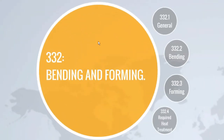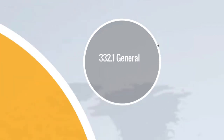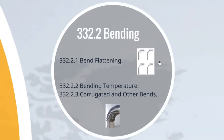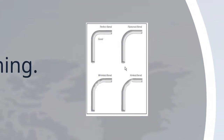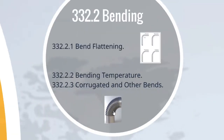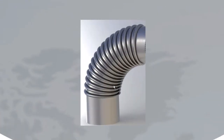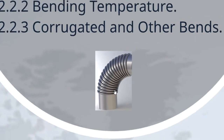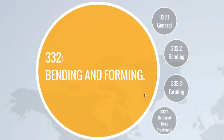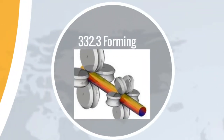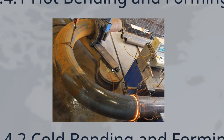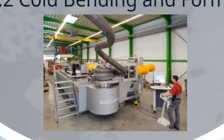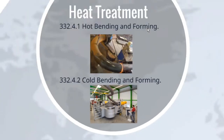Subpara 332.1 is General. Subpara 332.2 is Bending, subdivided into subsections covering bent flattening, bending temperature, and corrugated and other bends. Subpara 332.3 provides the requirements for forming. Subpara 332.4 provides the requirements for heat treatment required for hot bending and forming in subsection 332.4.1, and cold bending and forming in subsection 332.4.2.